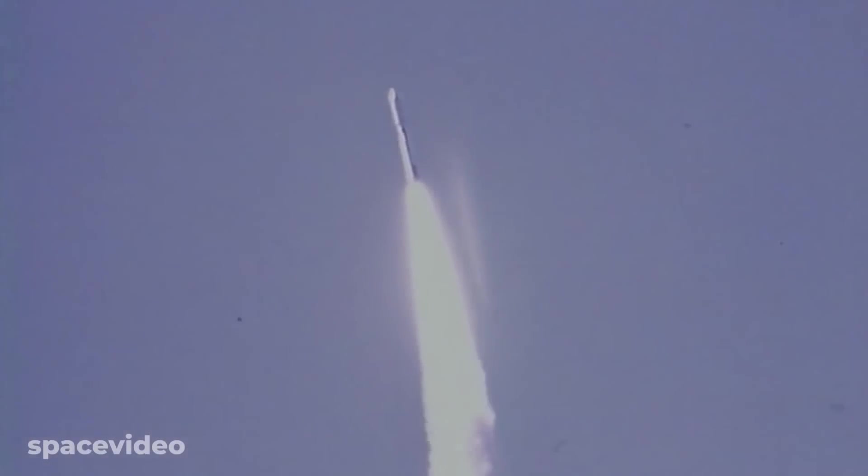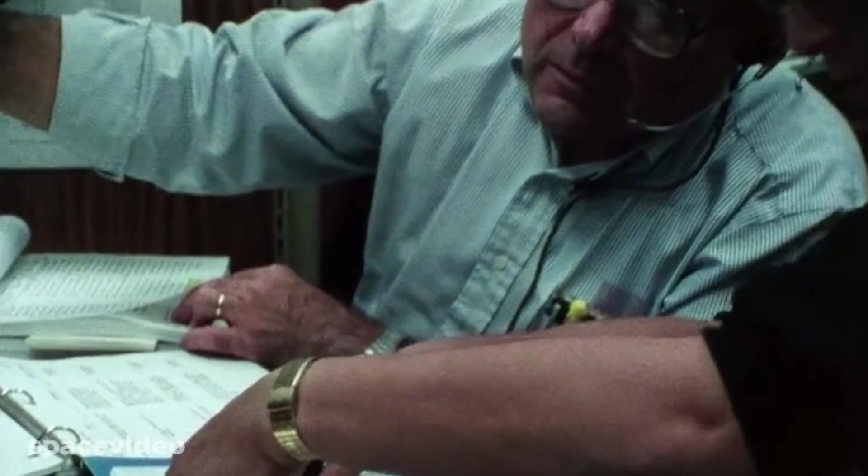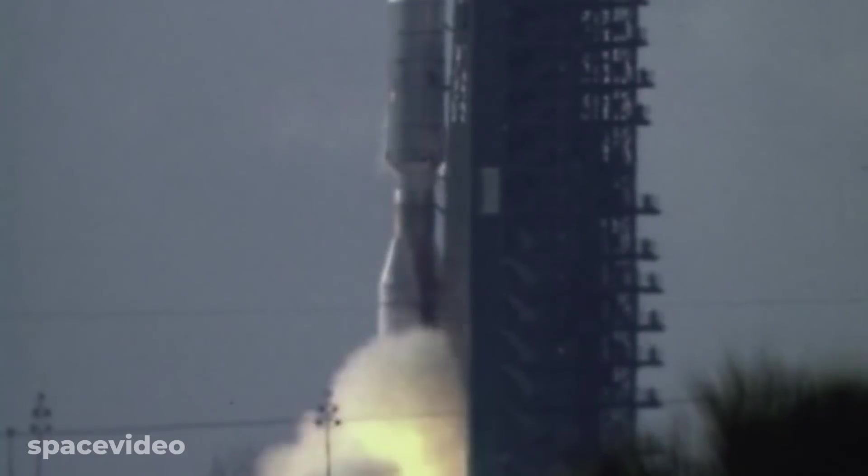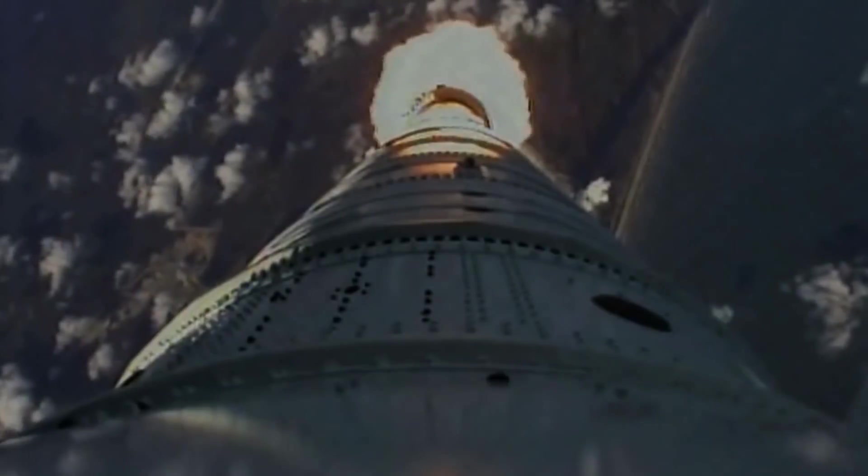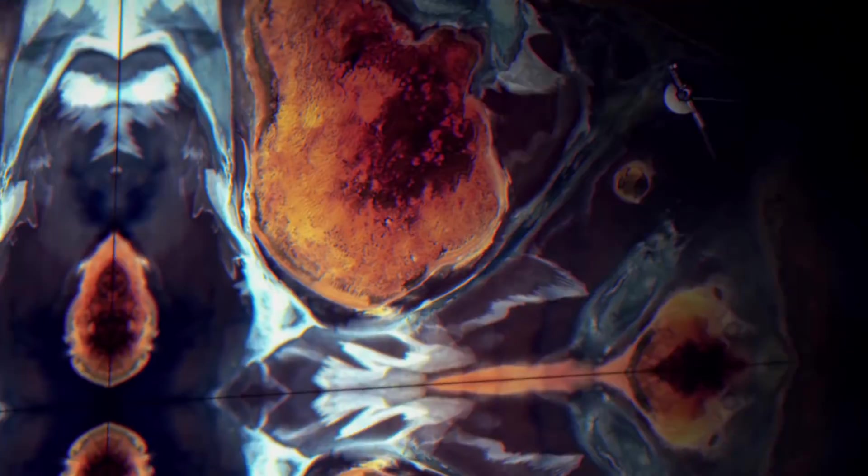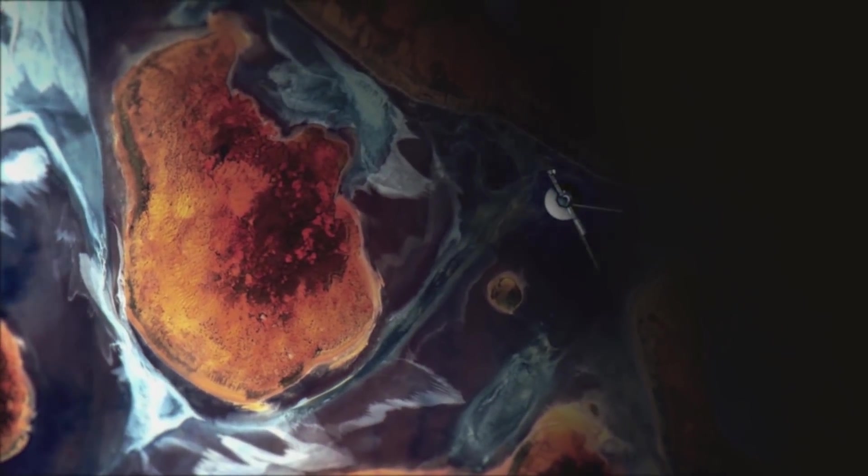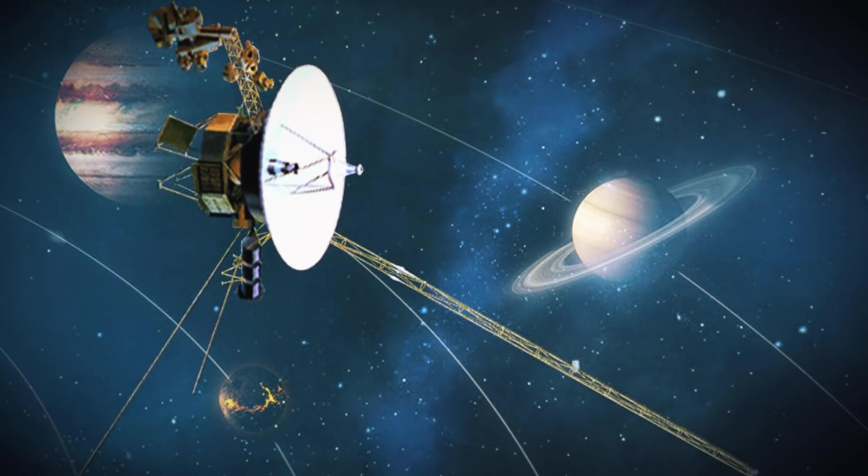Voyager 2 was launched from Cape Canaveral on August 20, 1977, and Voyager 1 was sent into space on September 5, only weeks later. Just 18 months into their mission, the two ships made their first exploration.